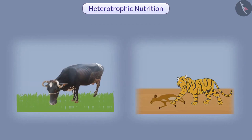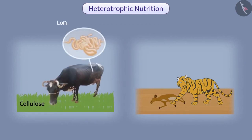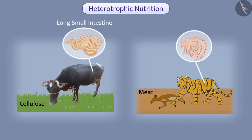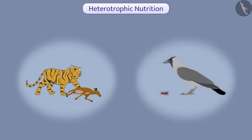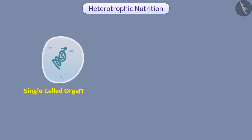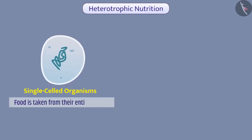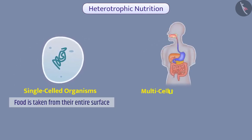In herbivore organisms, the food is stationary, while in carnivore organisms, the food is mobile. To digest herbivore food such as cellulose, organisms like cows have a long small intestine. Since the digestion of meat is simpler, animals like tigers have a short small intestine. Some organisms get their nutrition from dead organisms, whereas some get their food from living organisms. In single-celled organisms, food is taken from their entire surface, while multicellular organisms have an advanced system.